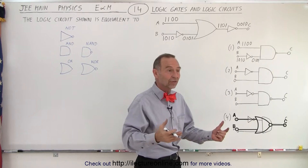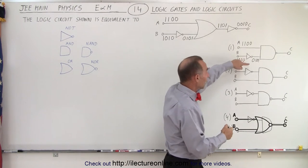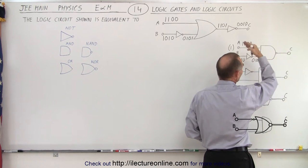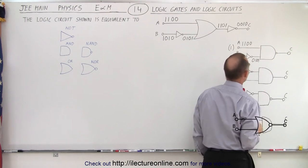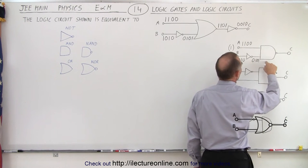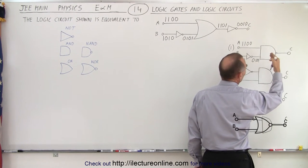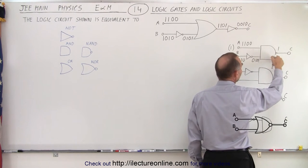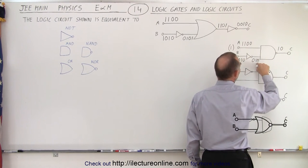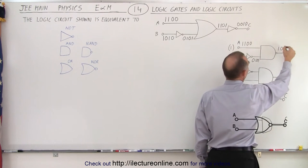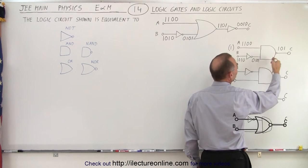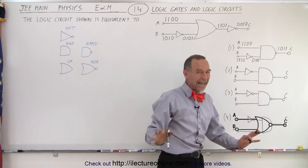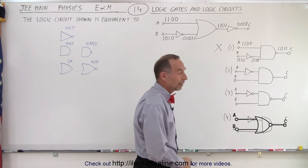Circuit A uses a NAND gate, which is the opposite of AND — when both inputs are high, the output is low. So: 1 and 0 → AND gives 0, NAND gives 1; 1 and 1 → AND gives 1, NAND gives 0; 0 and 0 → AND gives 0, NAND gives 1; 0 and 1 → AND gives 0, NAND gives 1. Output is 1, 0, 1, 1 — not the same as 0, 0, 1, 0, so circuit A is not the answer.